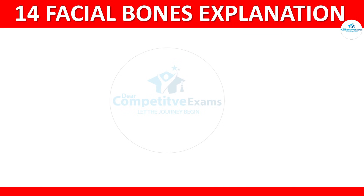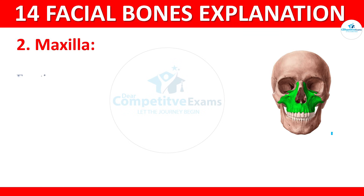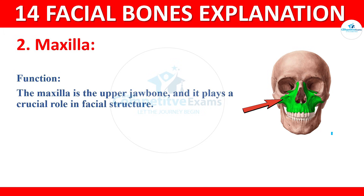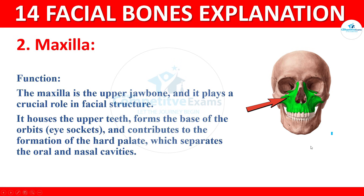The next bone: maxilla bone. The maxilla bone is the upper jaw bone and it plays a crucial role in facial structure. It houses the upper teeth, forms the base of the orbits (eye sockets), and contributes to the formation of the hard palate, which separates the oral and nasal cavity.